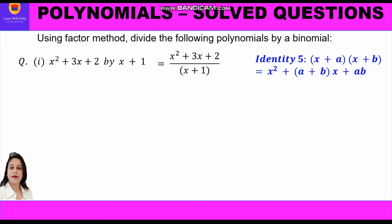Identity 5 is: (x + a)(x + b) = x² + (a + b)x + ab. We have to think of two numbers a and b such that their sum is 3 and their product is 2. We know that 2 plus 1 is 3 and 2 times 1 is 2, so a is 2 and b is 1.